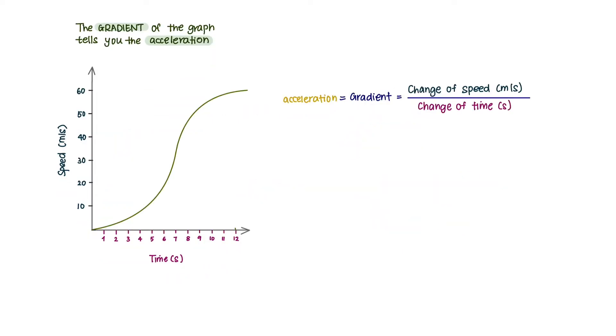However, sometimes you don't always get a straight line. If you see a curved line, it tells you the acceleration is changing. An increasing slope means the acceleration is increasing, and a decreasing slope means it's decreasing.